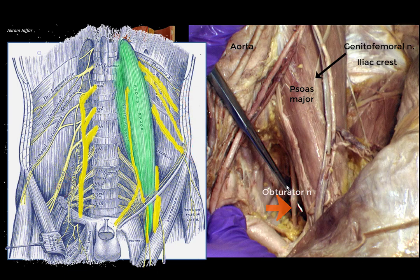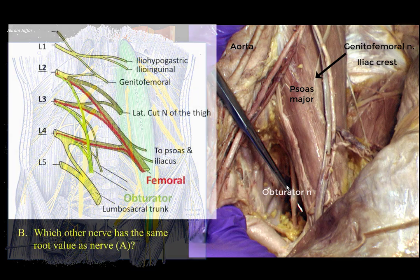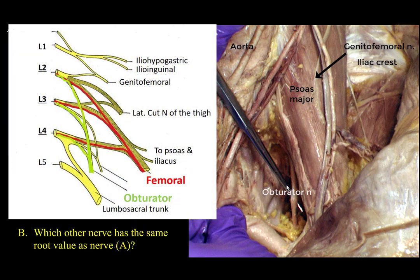The obturator nerve's root value is L2, L3, and L4. The nerve is derived from the anterior divisions of the anterior primary rami of L2, L3, and L4. The same spinal levels — L2, L3, and L4 — via the posterior divisions of the anterior primary rami, give rise to the femoral nerve. The femoral nerve is lateral to psoas and supplies the anterior compartment of the thigh, and so it shares the same root value with the obturator nerve.